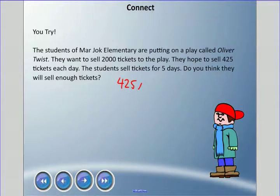Okay, so to get the exact answer we're doing 425 times 5. Let's change this 425. We're going to use front-end rounding, so we'll change this to 400 times 5. 4 times 5 is 20 and the two zeros, and we get 2000. Do you think they will sell enough tickets? If they do manage to sell 425 a day, yeah they would make exactly that 2000 tickets to the play.